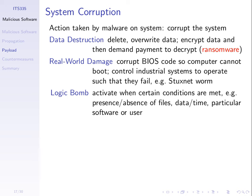Malicious software can also cause real-world physical damage. One example is the Stuxnet worm, which was installed on computers that controlled machinery in a nuclear facility, making that machinery operate outside its normal operating conditions — for instance, making something spin so fast that it would break down. This was causing real physical damage through malicious software.